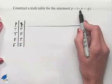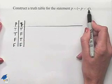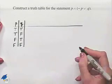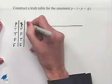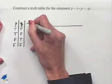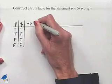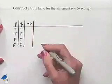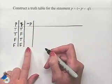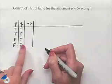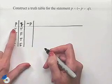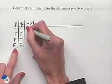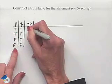Next, we're going to work inside the parentheses, where we'll need the negation of P as one of our columns. To get this truth table value, we're going to take the column for P and take the opposite truth values.